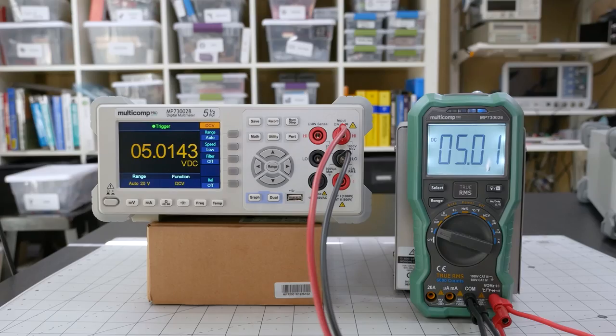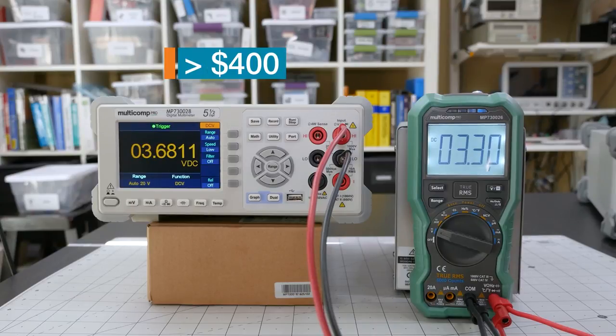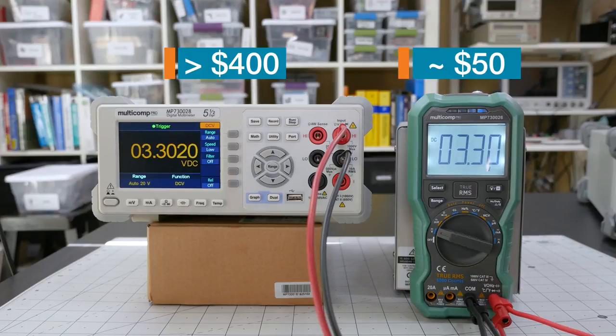So, in general, a meter with more digits is probably more accurate, but digits and counts alone do not tell the full story. Also, don't forget price. Yes, the bench meter is much more accurate than the handheld, but it costs hundreds of dollars compared to a handheld, which could be less than $50.